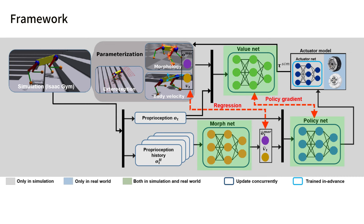We concurrently update the controller and a novel morph net, which acts as both a morphology and body-state estimator. What is crucial for the successful sim-to-real transfer is that we pre-train an actuator network using data collected from the real machine.